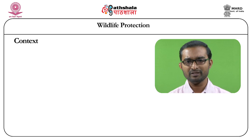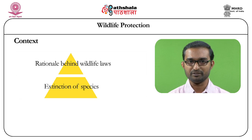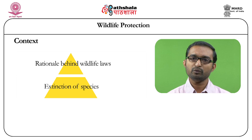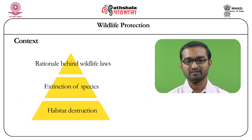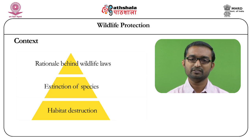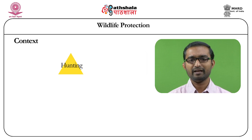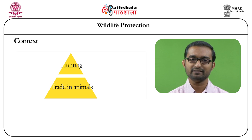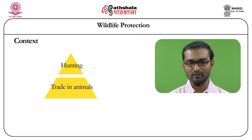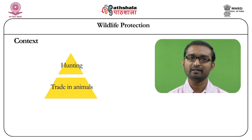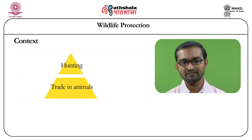The rationale behind wildlife laws in India is mainly the extinction of species. A large number of species have been extincted or many species are on the verge of extinction in the contemporary context. The most important reason is habitat destruction — whatever affects the forest can have direct implications on wildlife. Another major factor is hunting and trade in animals, which has been a major reason even at the international level. These are the three major reasons why wildlife law in India has been developed: habitat destruction, hunting, and trading in animals.